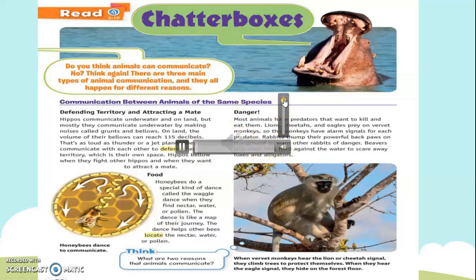It is your student book page 80, and this page looks very interesting. I can see a hippo, I can see a honeybee, and I can see a vervet monkey as well, which is on a tree. Let's start reading. Chatterboxes. Do you think animals can communicate? Think again. There are three main types of animal communication and they all happen for different reasons: communication between animals of the same species, defending territory, and attracting a mate. Hippos communicate underwater and on land, but mostly they communicate underwater by making noises called grunts and bellows. On land, the volume of their bellows can reach 115 decibels — that's as loud as thunder or a jet plane. They communicate with each other to defend their territory and to attract a mate.